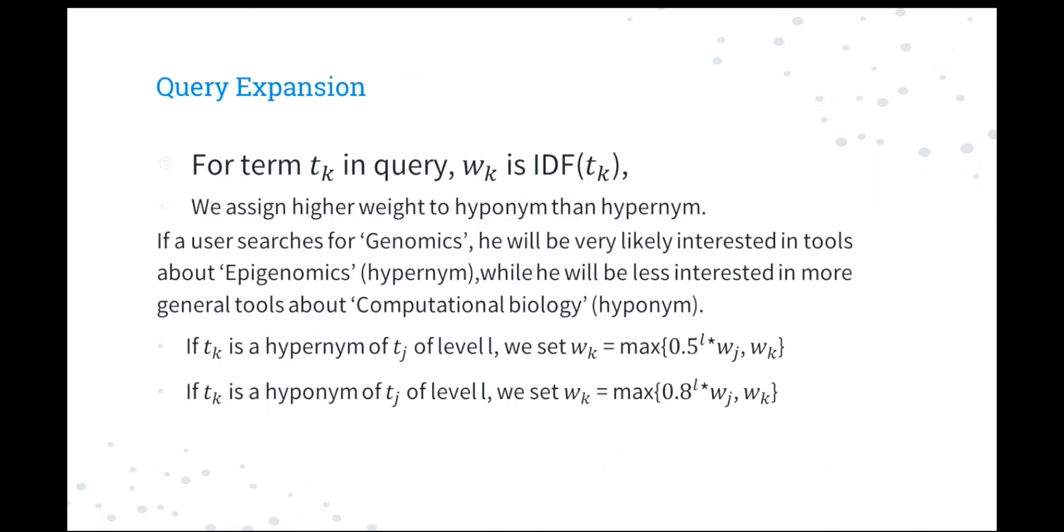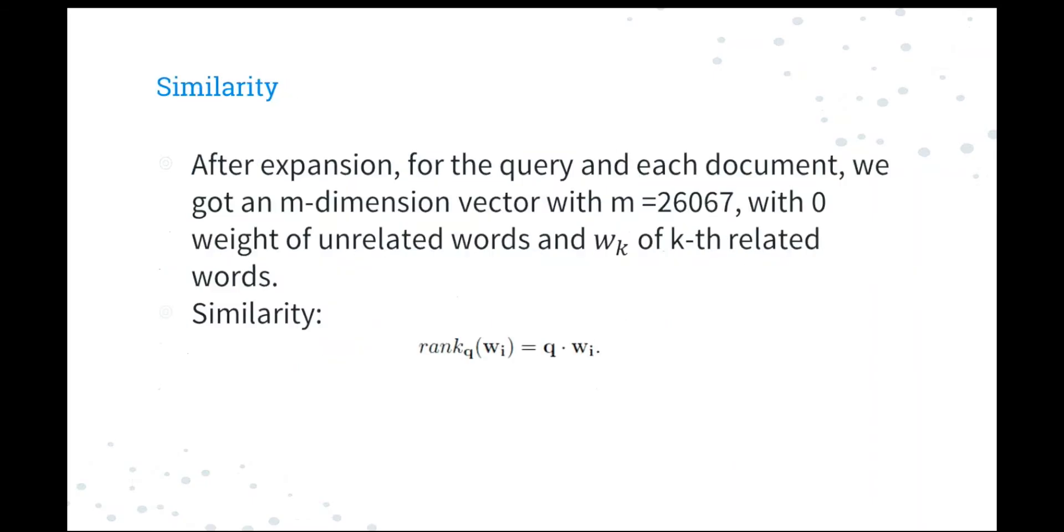We apply the same schema to the query. For term tk in the query, its weight wk is the IDF of tk, which we got in the first part. And now we assign higher weight to hyponyms. So if a user searches for genomics, he will be very likely interested in the tools about epigenomics, which is its hyponym. While he will be less interested in more general tools about computational biology, which is its hypernym.